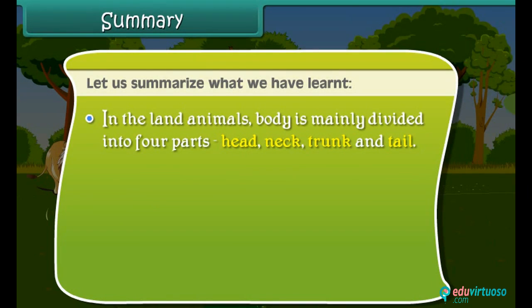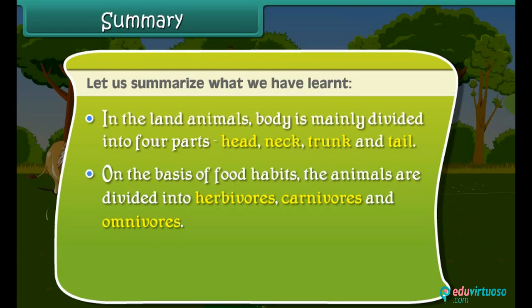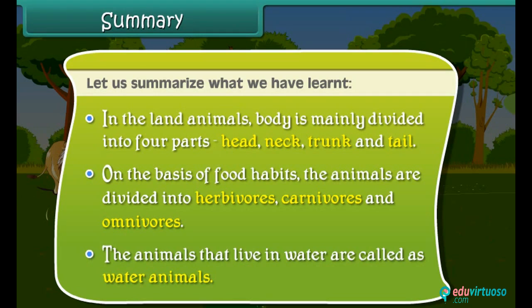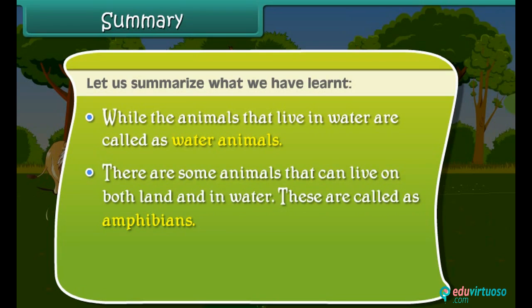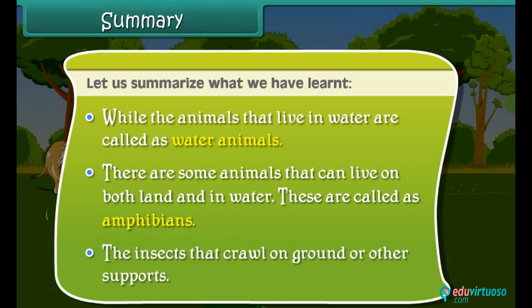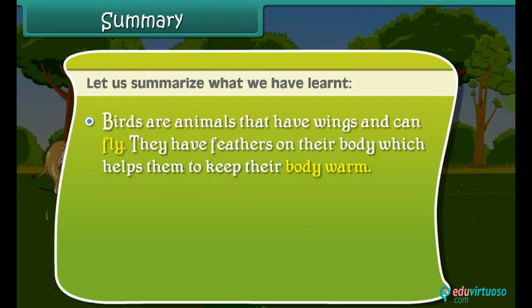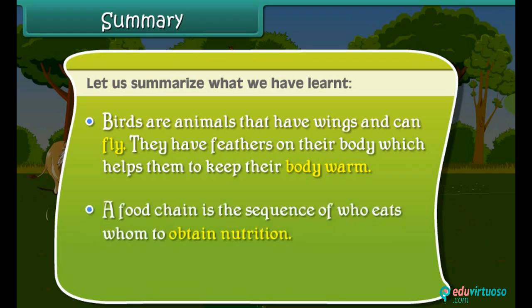In land animals, the body is mainly divided into four parts: head, neck, trunk and tail. On the basis of food habits, animals are divided into herbivores, carnivores and omnivores. Animals that live in water are called water animals, while those that can live both on land and in water are called amphibians. Insects crawl on the ground. Birds have wings, feathers, and can fly. A food chain is the sequence of who eats whom to obtain nutrition.